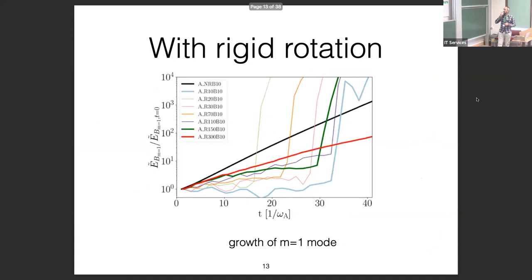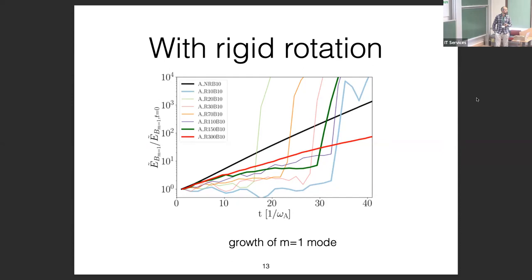This shows the growth of the m=1 mode for different cases where rotation is varied: from the non-rotating (purely linear) case, to slow rotation at 300-day period, down to 10-day rotation period. At 10 days of rotation, we see basically no growth of the m=1 mode for the first 30 Alfvén travel times, which should be enough to say the field is stable — meaning such rotation can stabilize the field.